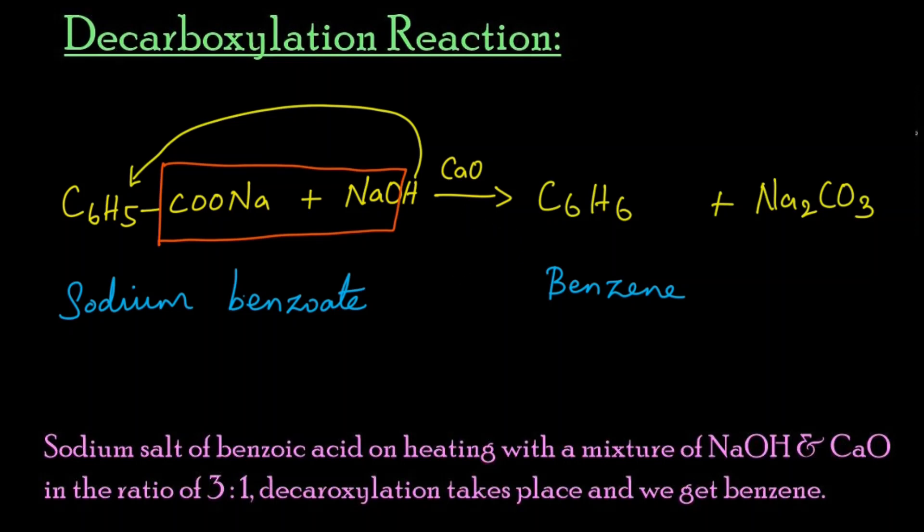In the ratio of 3 to 1 - that is very important - decarboxylation takes place. That is, removal of carbon dioxide group. The CO2 group will be eliminated; that is called a decarboxylation reaction. Finally, we get benzene as the product.